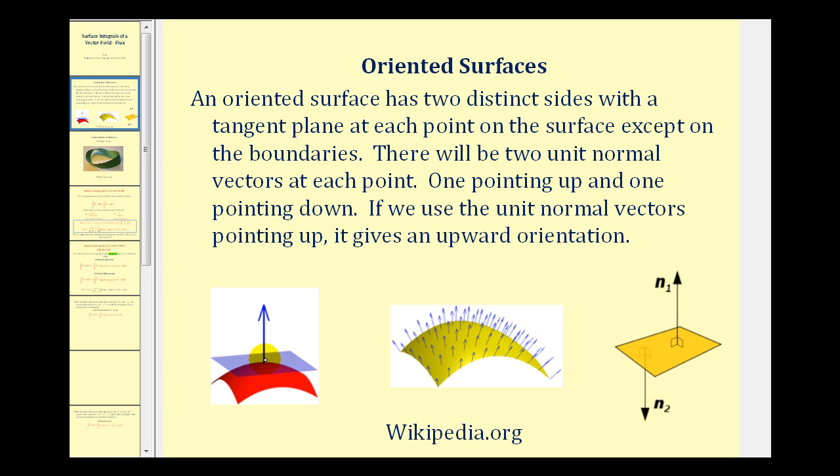Here we see a surface in red with a blue tangent plane. At the point of tangency there are two possible unit normal vectors. One pointing up, pictured here in blue, and one pointing down not pictured here. If we use the unit normal vectors pointing up, it gives the surface an upward orientation.